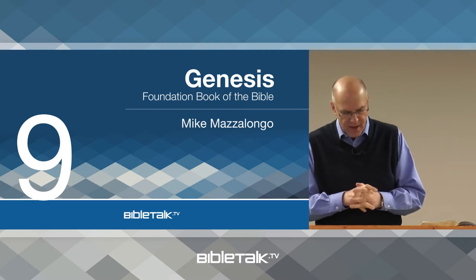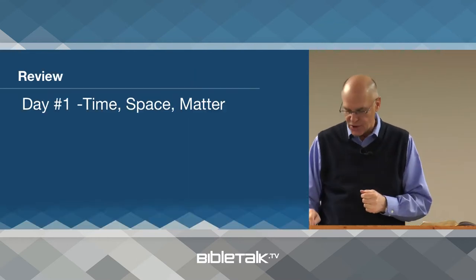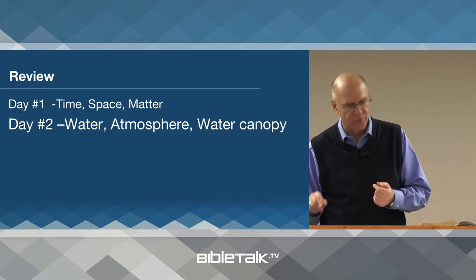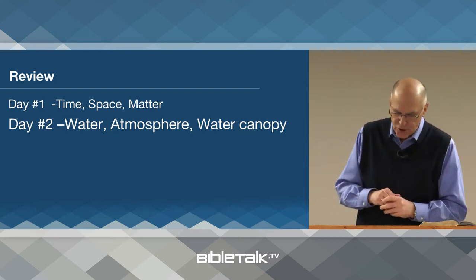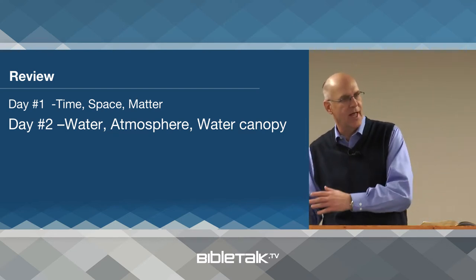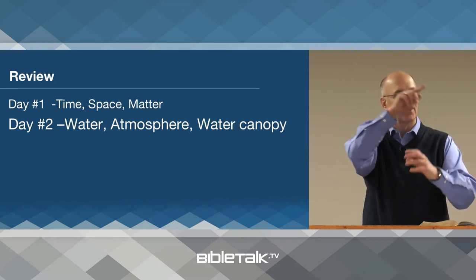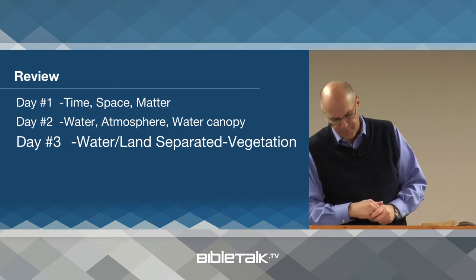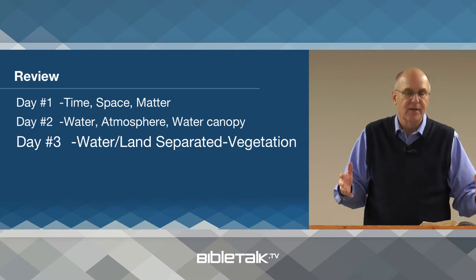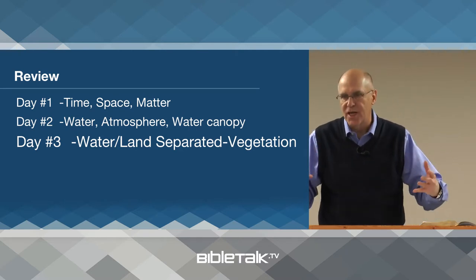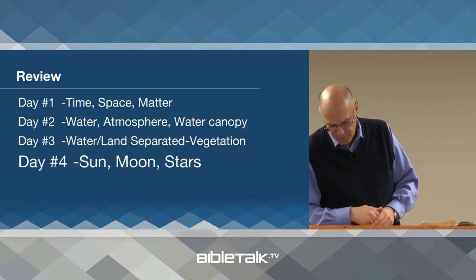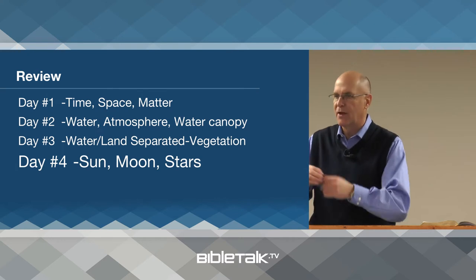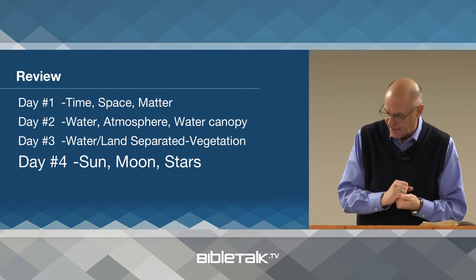So far we have looked at the first four days of creation. Day number one: time, space, and matter are created. Day number two: water, atmosphere, and water canopy — the water on the earth, the atmosphere around the earth, and the water canopy that surrounded that. Day number three: water and land are separated, and then vegetation is created. Day number four: the sun, the moon, and the stars.